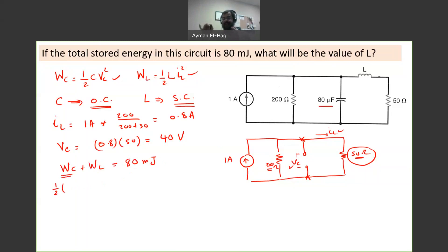C is 80 microfarad. I always like to write everything in SI units, so this becomes 80 times 10 to the minus 6. Convert everything to farads so that you will not be confused when there is any unit conversion. Times VC squared, which is 40 squared, plus WL, one half.